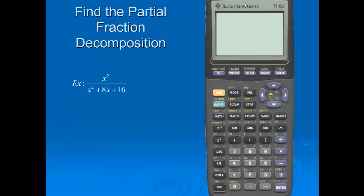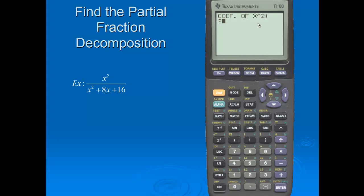Let's find the partial fraction decomposition for the rational expression x squared divided by x squared plus 8x plus 16. We'll start the part frac program in our calculator. First it asks for the degree of the numerator, which is 2. The coefficient of x squared is 1. We don't have an x to the first power, so I'll put in a 0 filler. And the constant on the end is also 0.